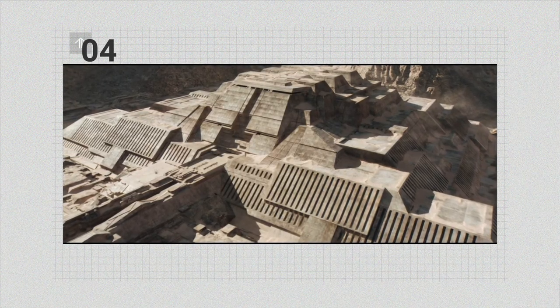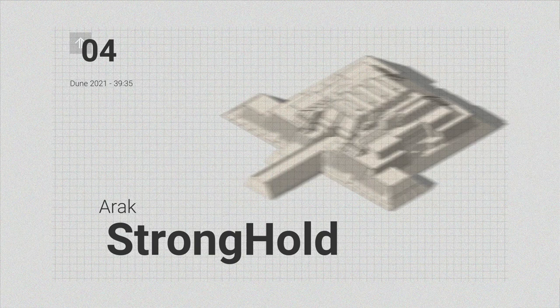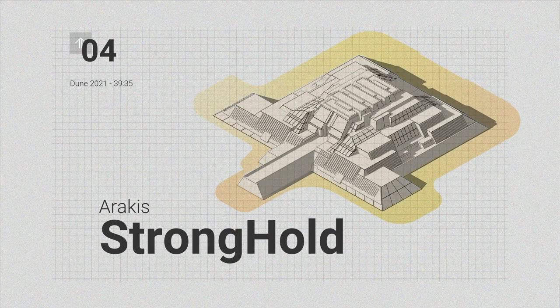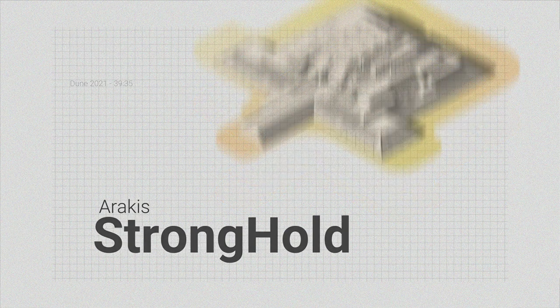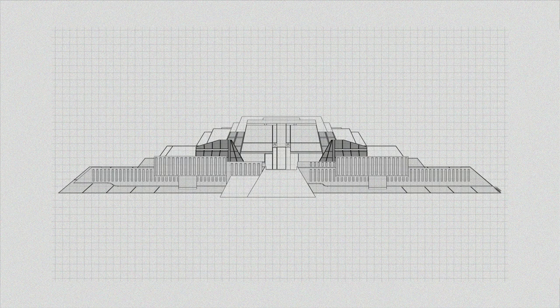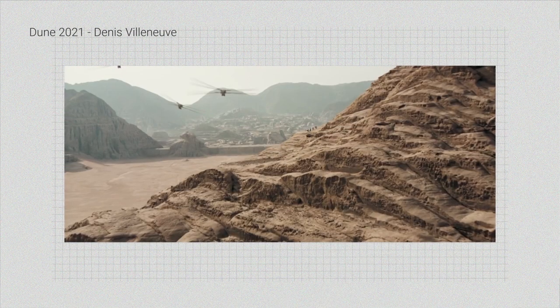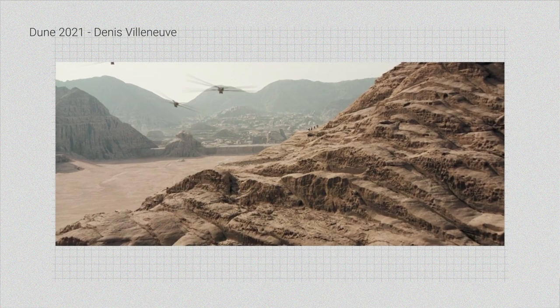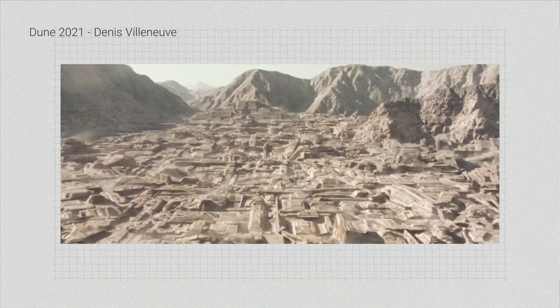The third world is Arrakis, and we want to talk about the fortress stronghold, which is the primary building in the city. The ziggurat shape is almost a reminder to pyramids, and it has many levels sitting on top of each other. Dune production designers have done a great job blending the architecture with the environment, and it's best seen here on Arrakis.